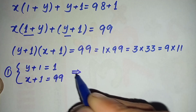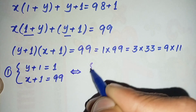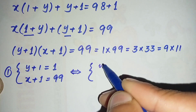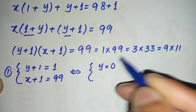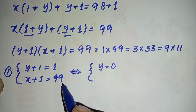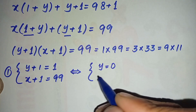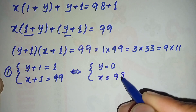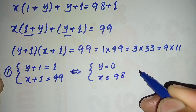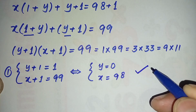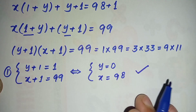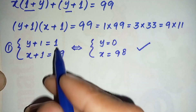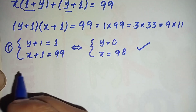From (y + 1) = 1, we get y = 0. From (x + 1) = 99, we get x = 98. So our first pair of solutions is (x, y) = (98, 0).